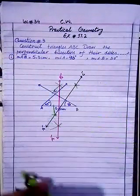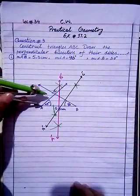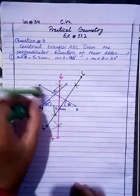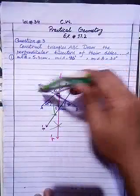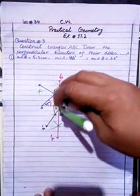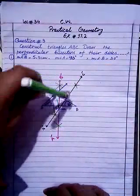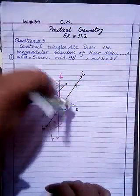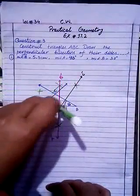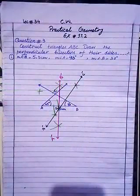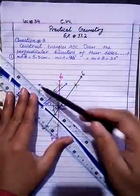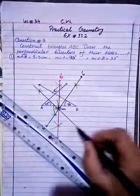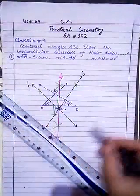Now do the bisection of AC. Open the compass to more than half but less than the full length of AC. Draw arcs above and below from point A. Put the compass at point C and draw arcs above and below — left and right. If the arc is too small, extend it. Find the points of intersection and join them. That is the perpendicular bisector of AC — name it A dash and C dash.